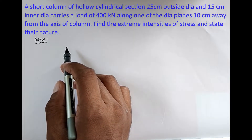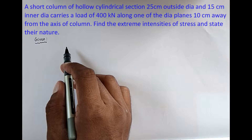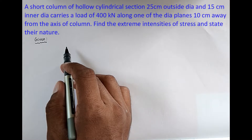The problem is: a short column of hollow cylinder section, 25 cm outer diameter and 15 cm inside diameter, carries a vertical load of 400 kN along one of the diametral planes, 10 cm away from the axis of the column. Find the extreme intensities of stresses and state their nature.